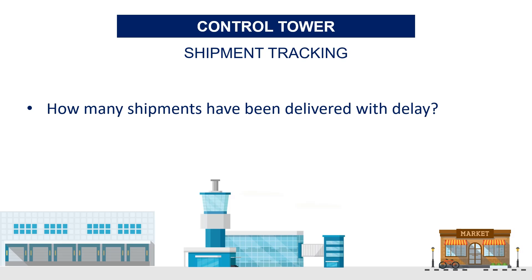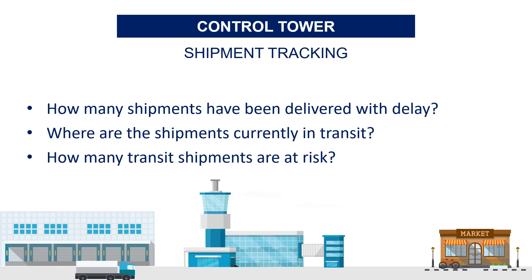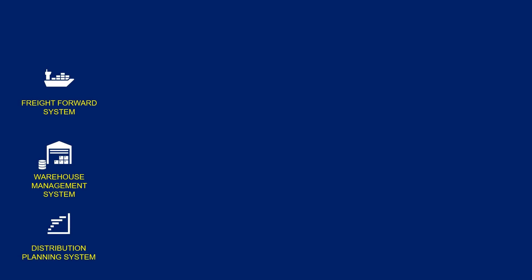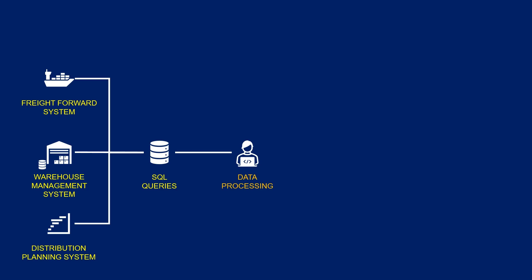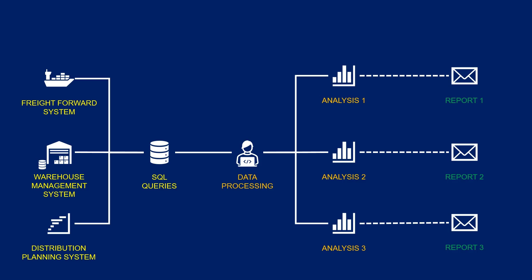Now we know the problems — let's build our own supply chain control tower using Python. The idea is to provide an automated tool that builds visuals to answer basic operational questions: descriptive analytics. How many shipments have been delivered with delay? Where are the shipments currently in transit? Or how many transit shipments are at risk of being delivered late? You start by creating SQL queries to extract shipment data with timestamps and perform preprocessing and harmonization. You then process the data with Python, perform analysis, build visuals, and send automatic reports via HTML emails.